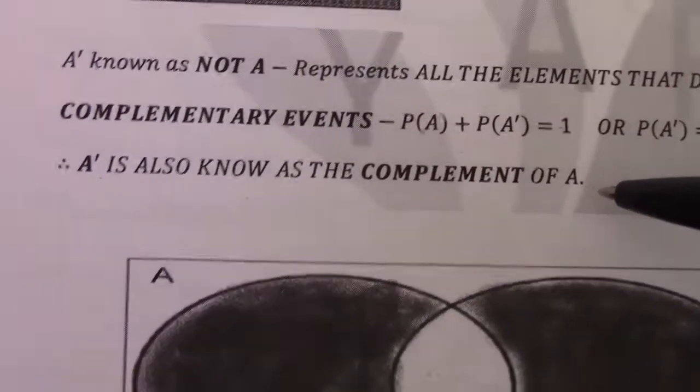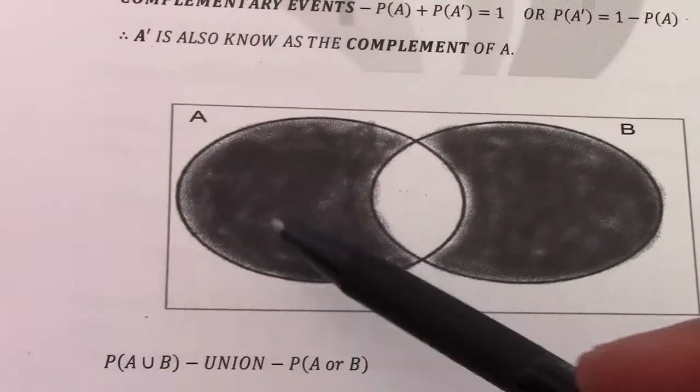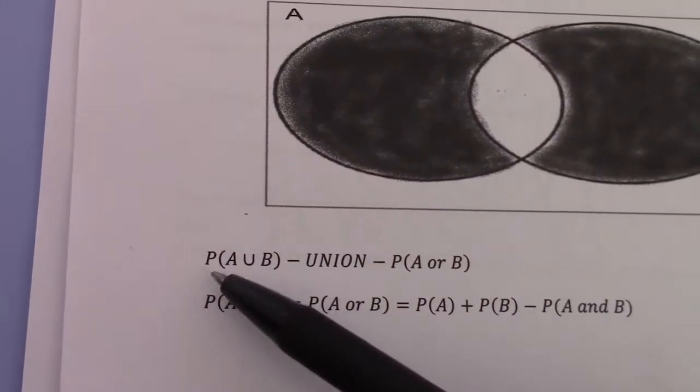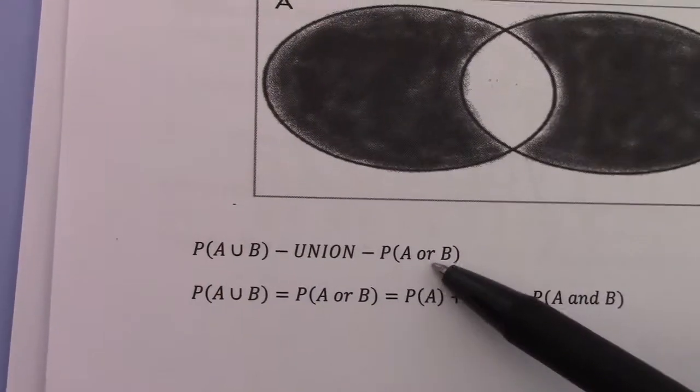Go to the second drawing there. If you look at the shaded area, I have A and B. That section is known as A union B, or probability of A or B.